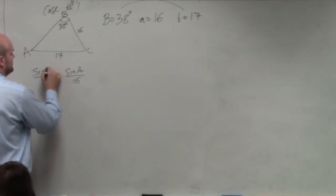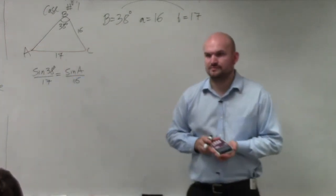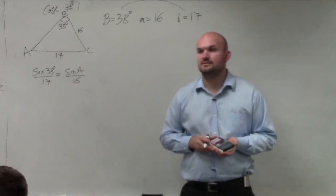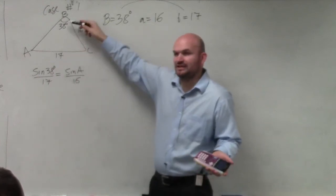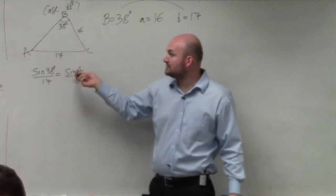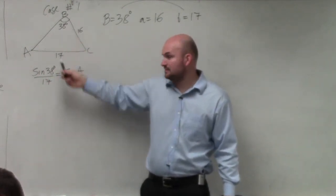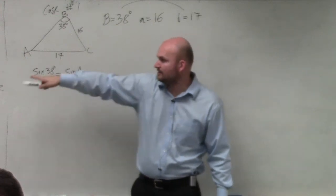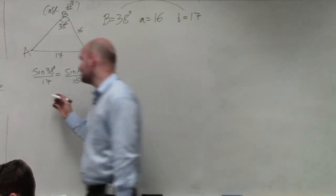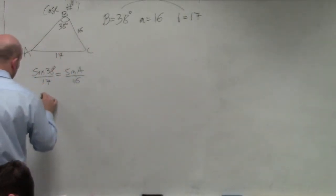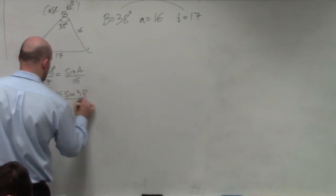Does everybody understand why I chose that ratio to do first? Because that's what we're given — you have to use it. To use the Law of Sines you have to have an angle and its opposing side. And since we're solving for an angle, I want the angles to be in the numerator. So I want to write the ratio like this rather than the other way. Now I'm going to multiply by 16 on both sides.